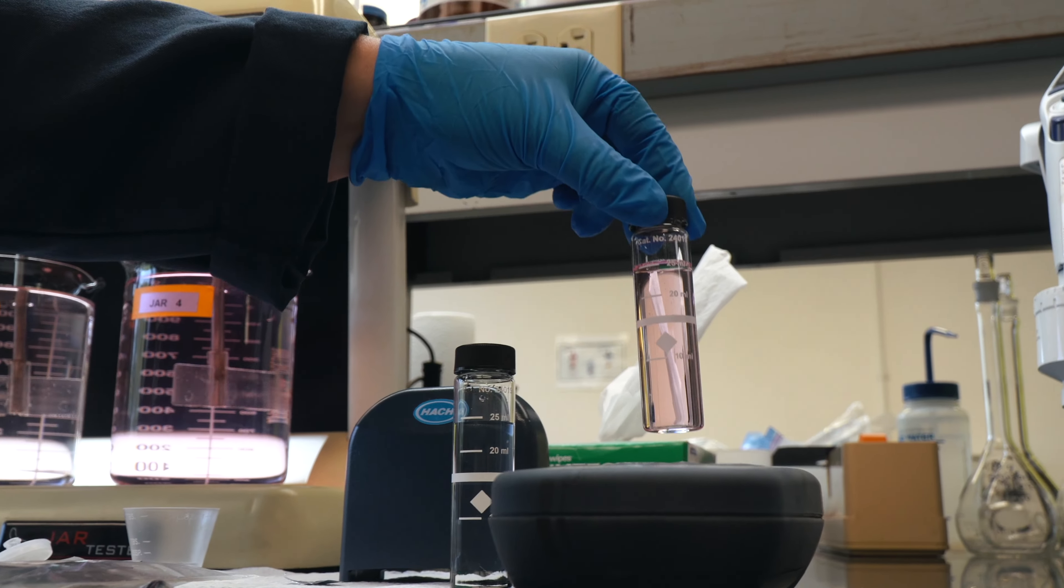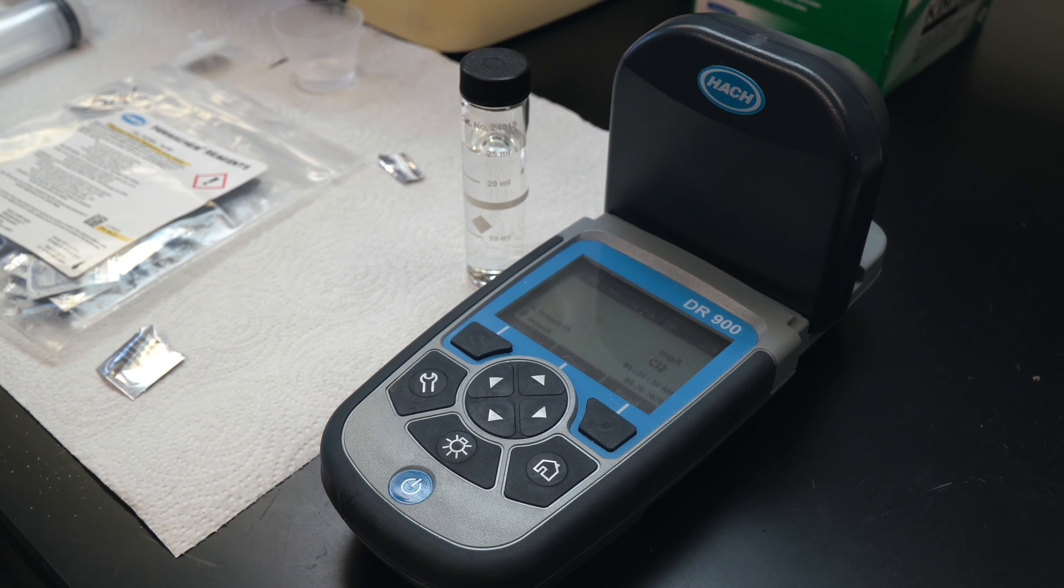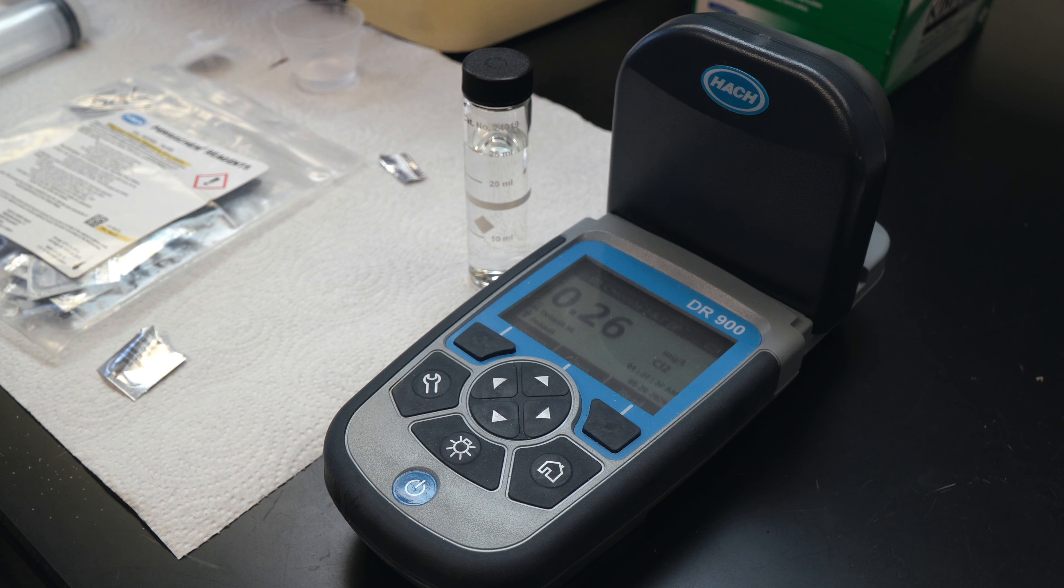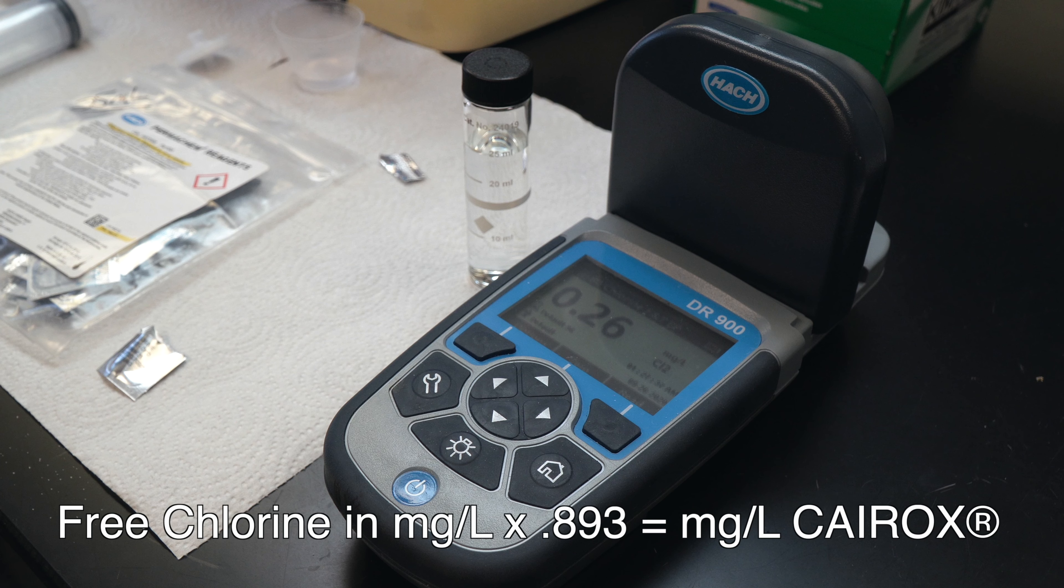Place this sample in the spectrophotometer and read the free chlorine value. Once you have the free chlorine value, you can do math to determine the actual concentration in milligrams per liter of Kerox potassium permanganate using the following equation.